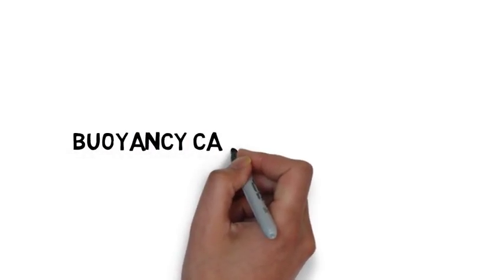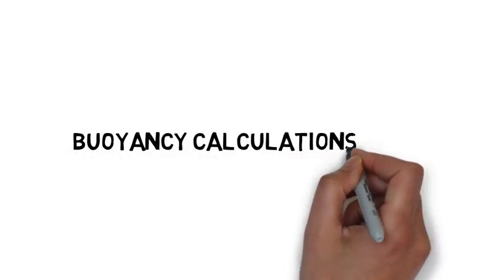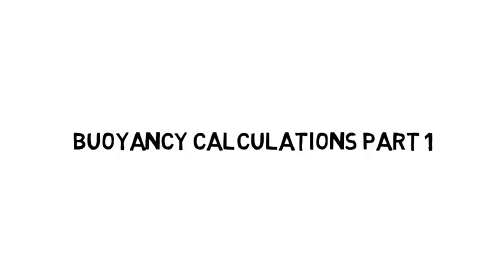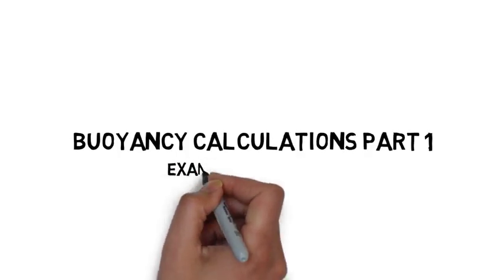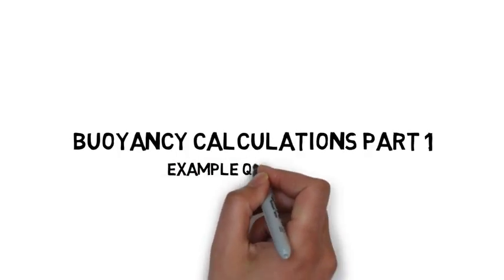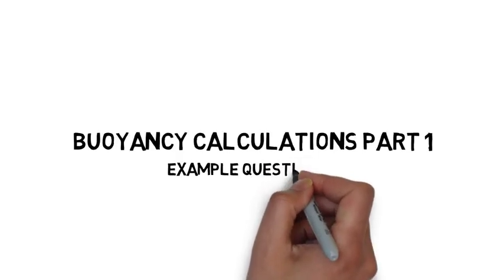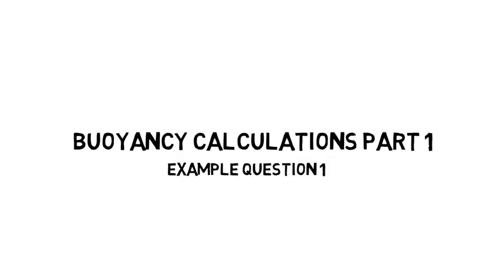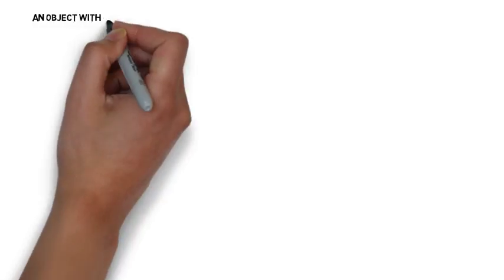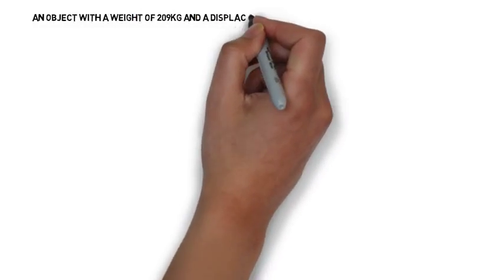We're on buoyancy calculations part one, this is example question one. In part one we are looking at just describing the buoyancy of an object based on the information given to us in the question.